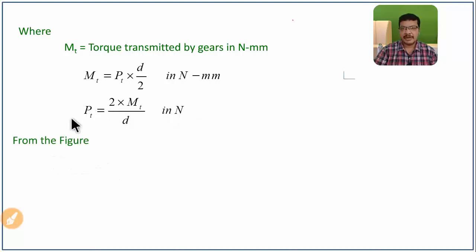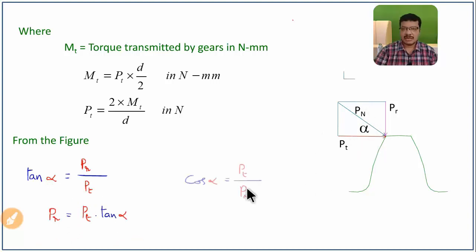Now, how to get Pr, the radial component? For that, take the help of this diagram. If you take tan α = opposite side Pr/adjacent side Pt, you get Pr = Pt tan α. If you take cos α = Pt/hypotenuse Pn, then Pn = Pt/cos α. In this way, we get the radial component and axial component.